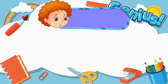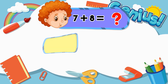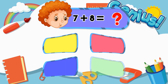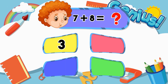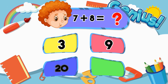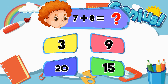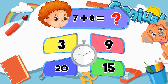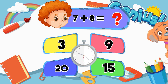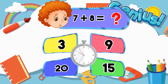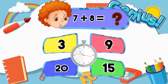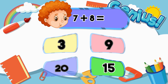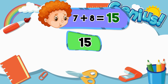What is 7 plus 8? 8, 9, 20, 15. The correct answer is 15.